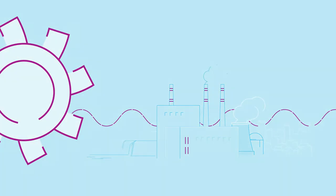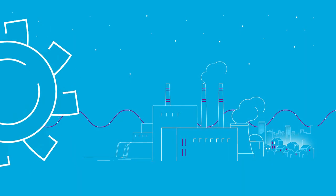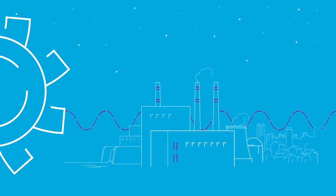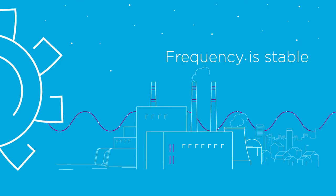With rotating machines, it's the same principle. When the generation or the load varies, the rotor's inertia allows them to keep rotating, thus ensuring true grid stability.